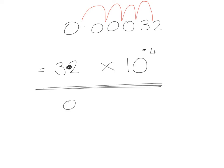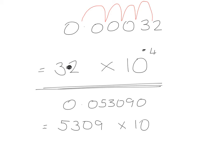Let's have a look at one more example: 0.053090. Step 1 — write down the first non-zero digit up to and including the last non-zero digit. So I'm going to write down 5, 3, 0, 9 — times 10 to the power of something. Step 2 — put a decimal point in between the first and second number. Step 3 — count how many spaces I've had to move: 1, 2. It's a small number, so it's going to be times 10 to the minus 2.